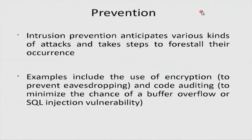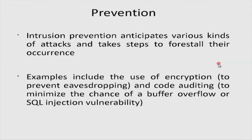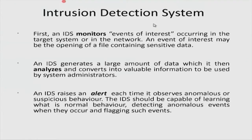Intrusion prevention anticipates various kinds of attacks and takes steps to forestall their occurrence. Examples include the use of encryption — for instance, if you suspect someone is eavesdropping on your line, you encrypt all messages going back and forth. Another example is code auditing to minimize vulnerabilities such as buffer overflow or SQL injection. Both encryption and code auditing are examples of preventive mechanisms.